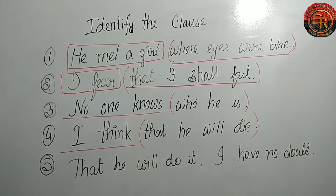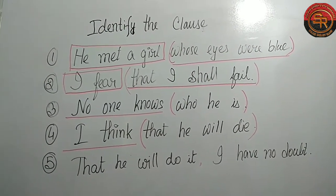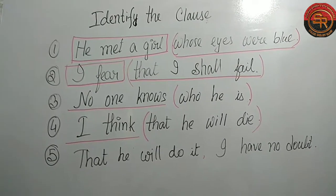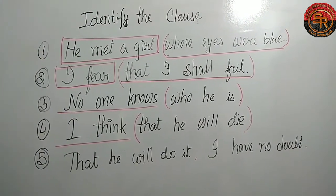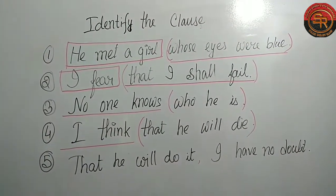In 'that he will die,' 'will die' is the finite verb, and 'that he will die' is the subordinate clause.